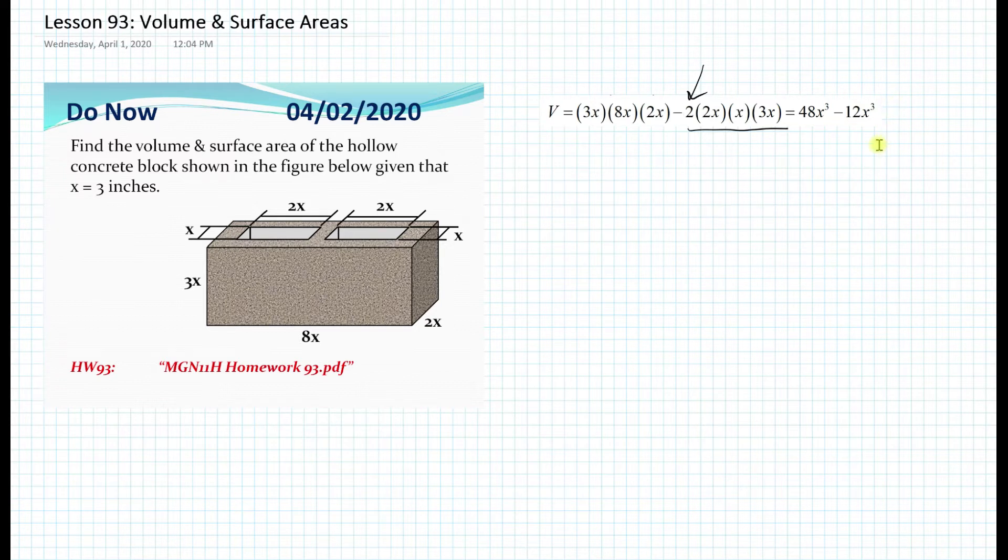Well, if you do the math, you end up with 48x cubed minus 12x cubed, which is going to give us a volume of 36x cubed.